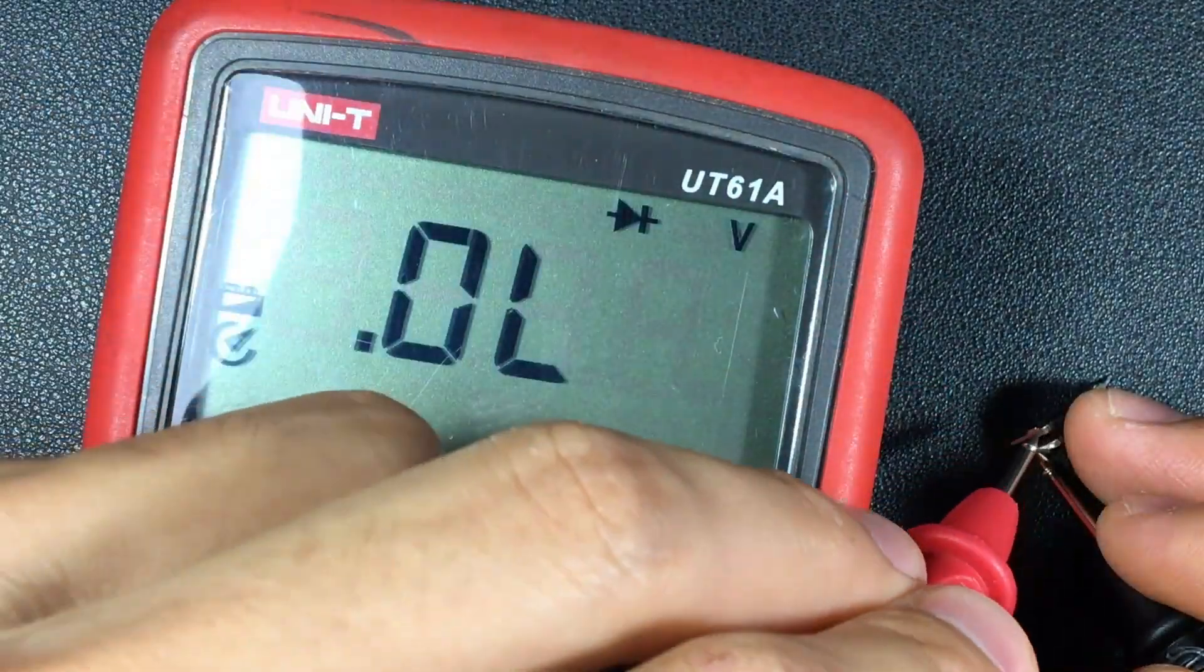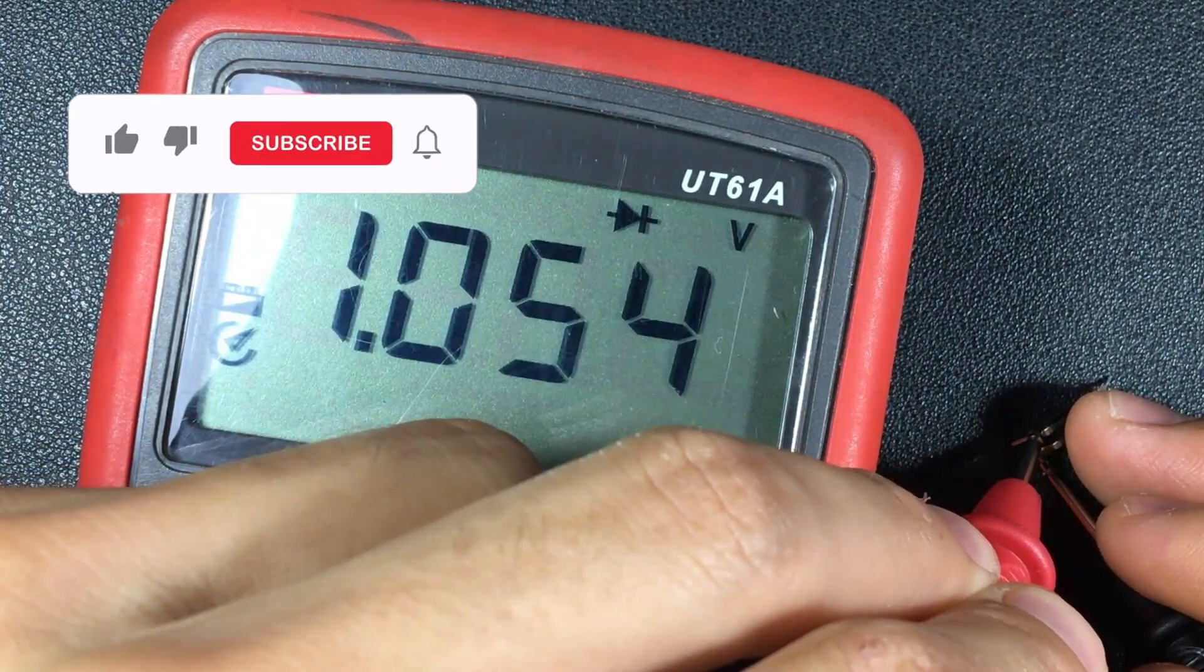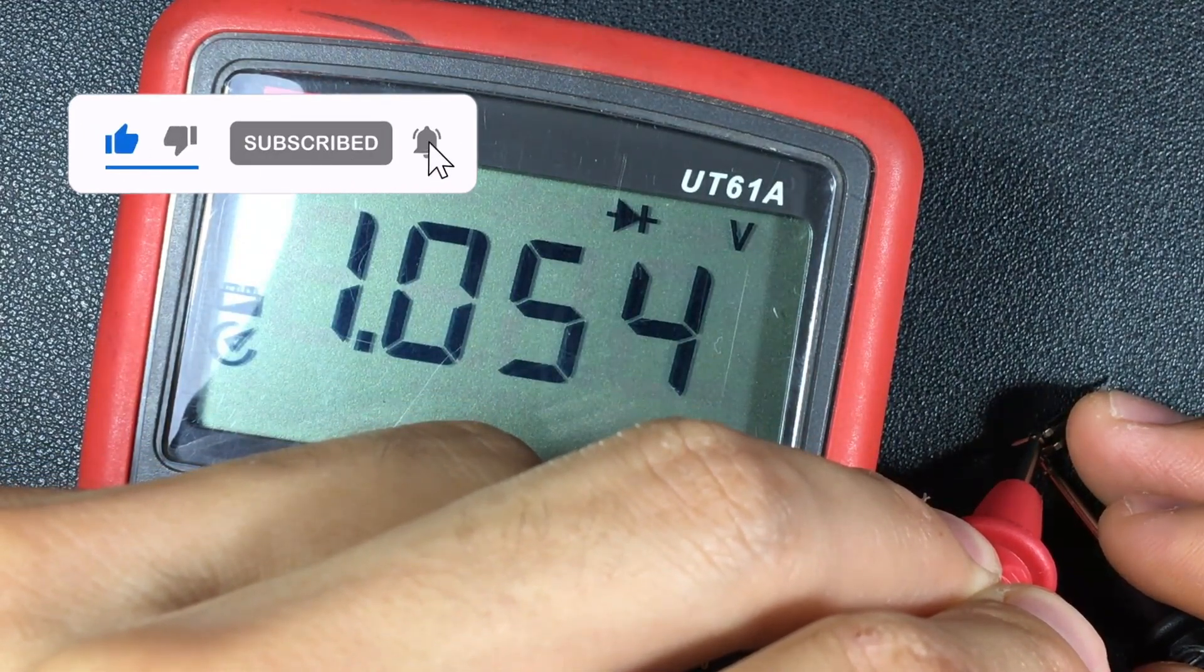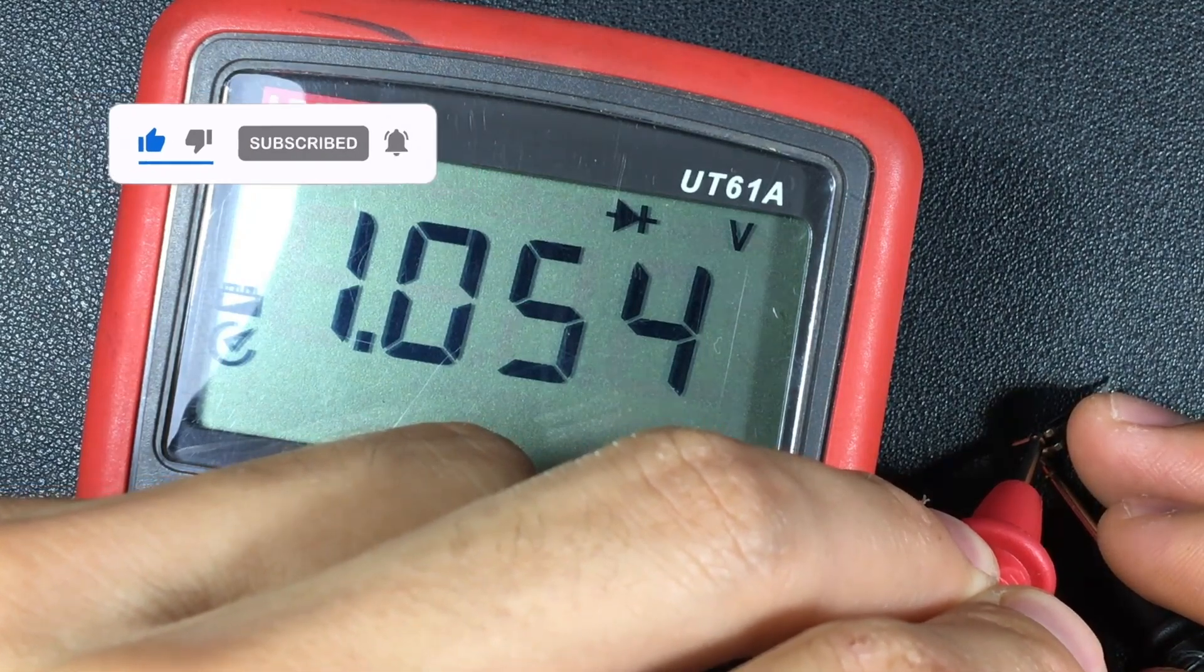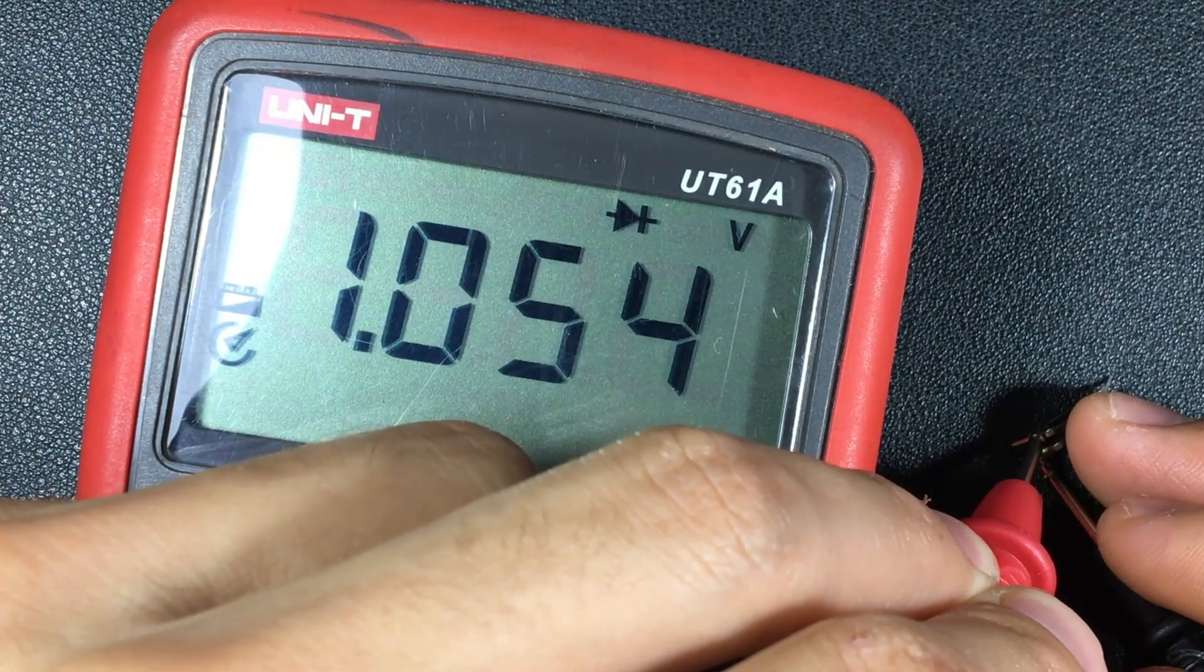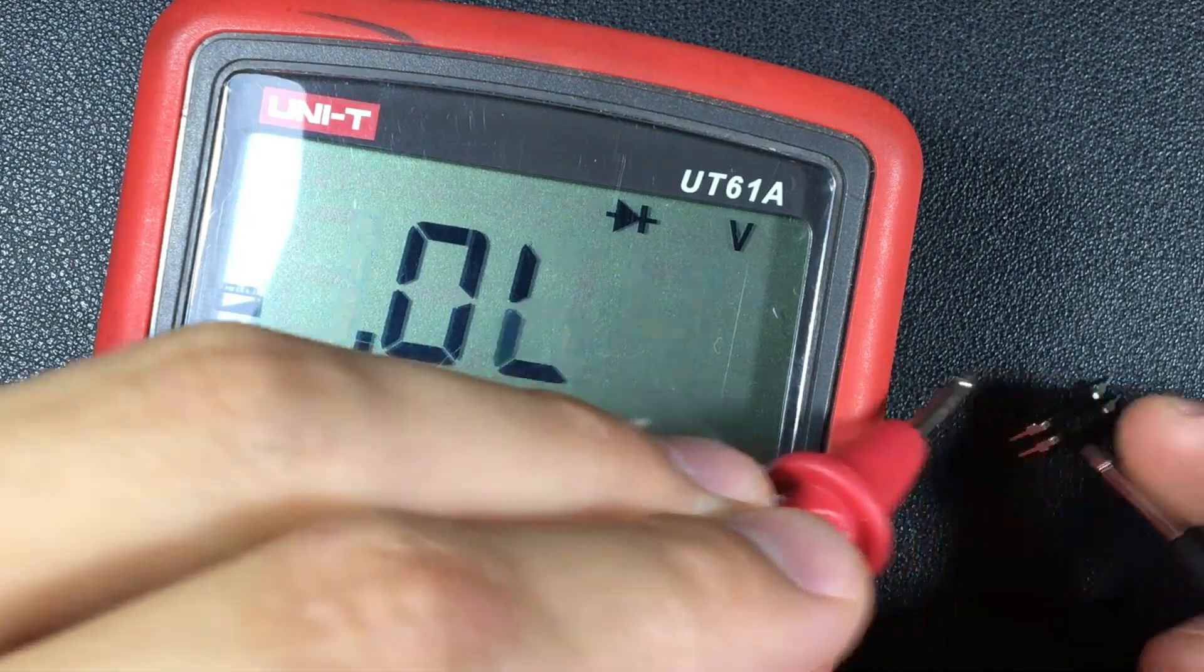The voltage drop of the LED is 1.05 volts. LED diodes have a voltage drop of a little more than 1 volt, generally, so this LED is perfect.